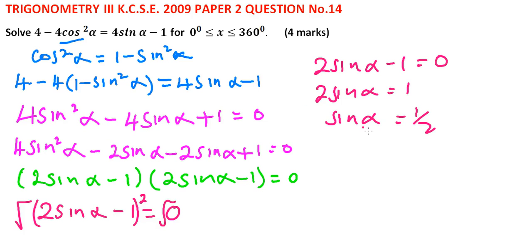From there, we look for the angles whose sign is 1 half, and alpha, the first angle, is in the first quadrant. It is 30 degrees.